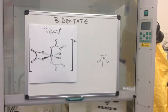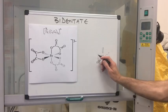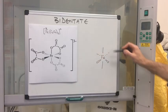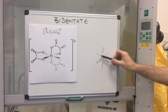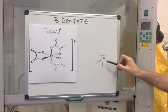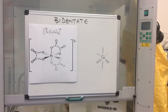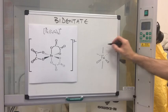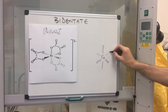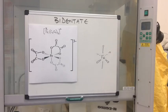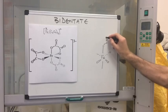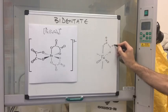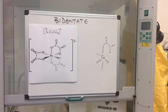Here's an easy way to draw these. Start with an empty octahedron with iron in the middle: one bond straight up, one straight down, two going back, and two sticking out. Remember it's the O⁻ that forms the dative covalent bond, then draw C double-bond O, C double-bond O for each ligand.